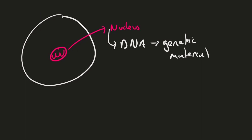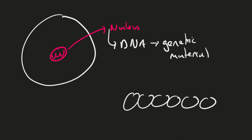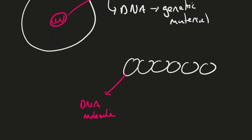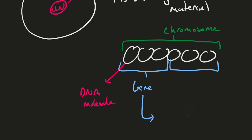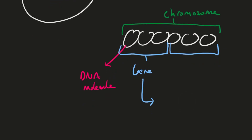Essentially chromosomes are made up of DNA molecules — each of these you can think of as a DNA molecule — and the whole thing is wound up into a structure called a chromosome. If you break it down further, each section of this can be called a gene, and essentially a gene is a group of these DNA molecules that contain the instructions to build a protein.